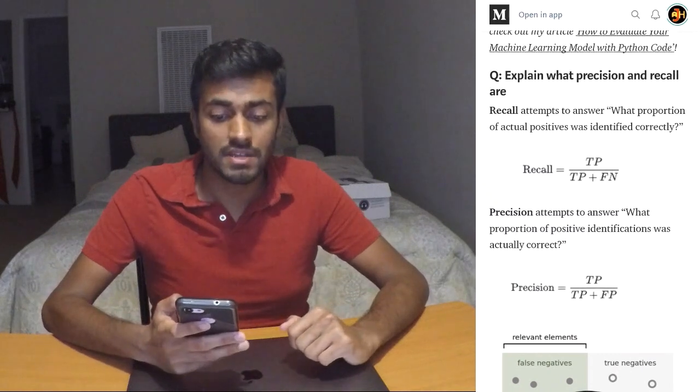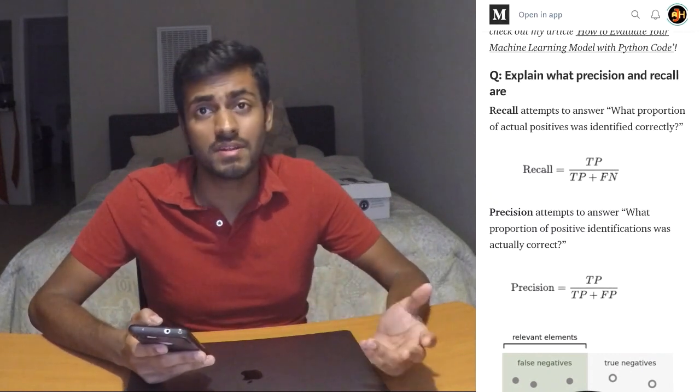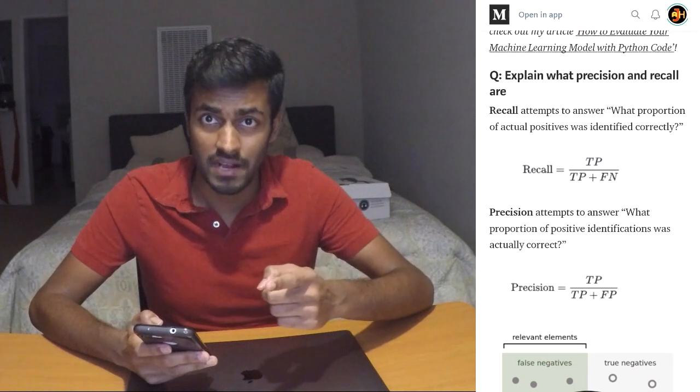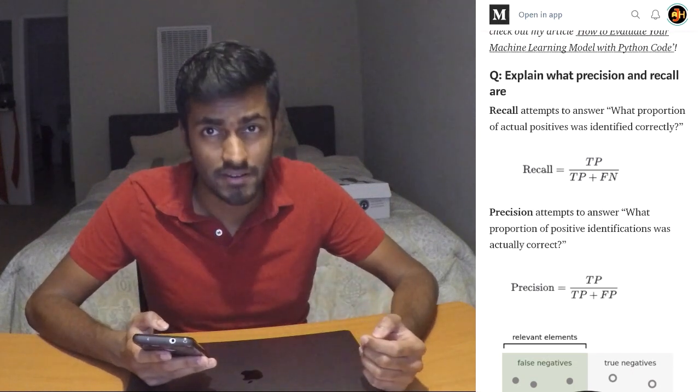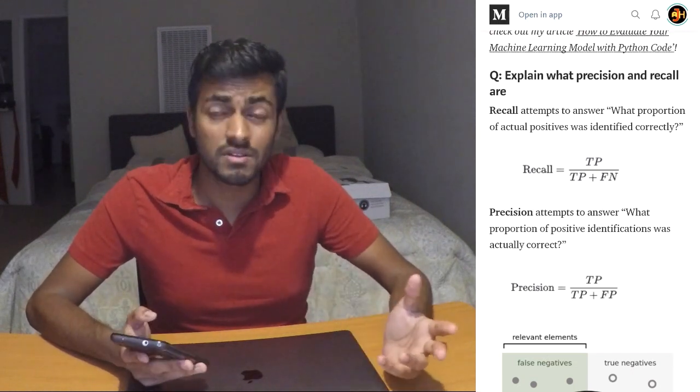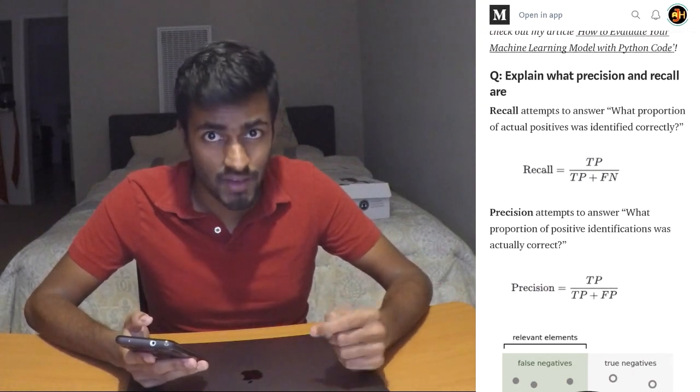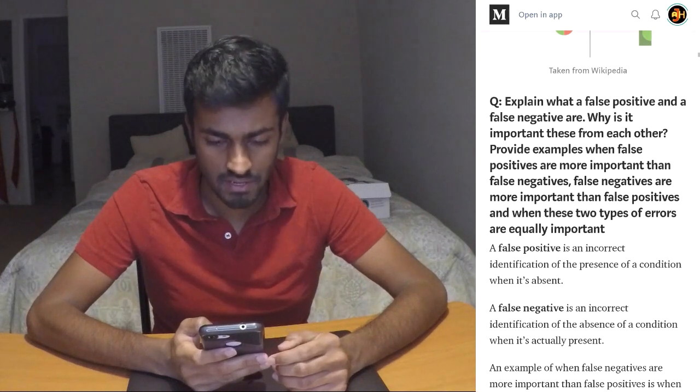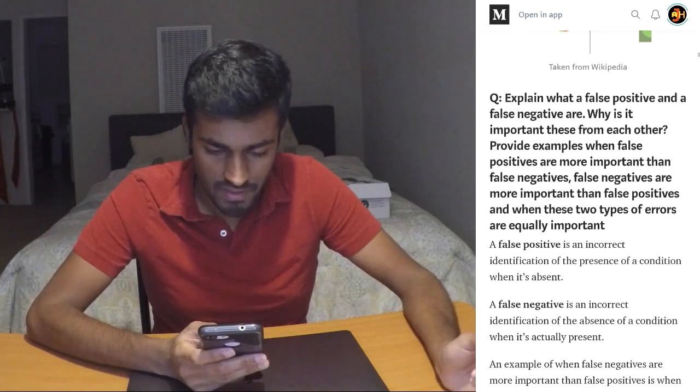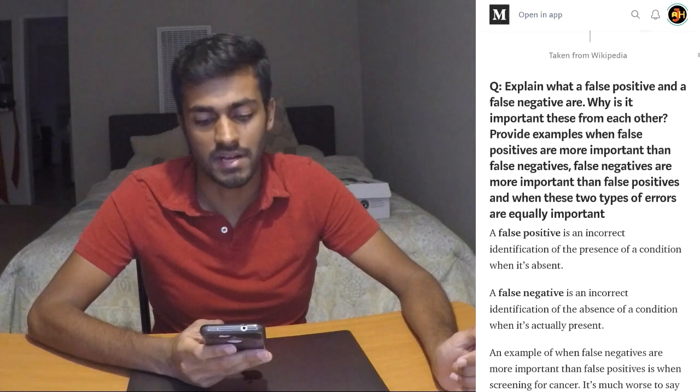Explain what precision and recall are. Precision: of the number of people who you said got the virus, how many of them actually got the virus? Recall: of the total number of people who got the virus, how many of them did you say got the virus? Explain what false positives and false negatives are. Why is it important? What's the difference between them? Provide examples when false positives are more important than false negatives and false negatives are more important than false positives.